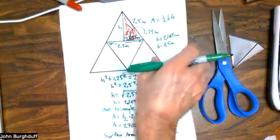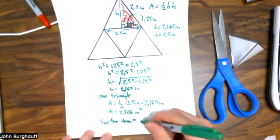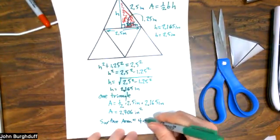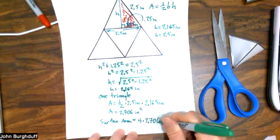So the total area, which would give you my surface area, would be four times the number I just got, four times 2.706.